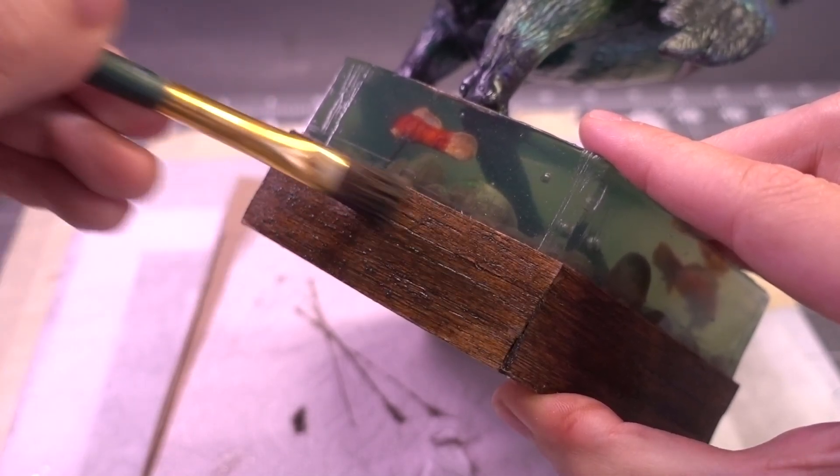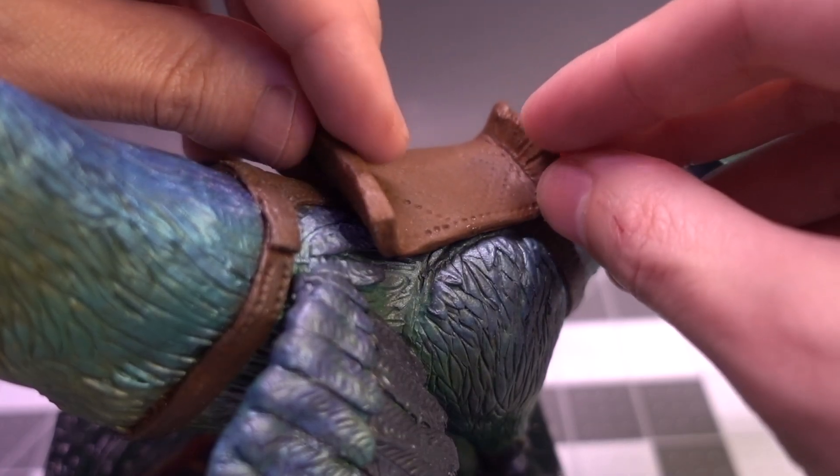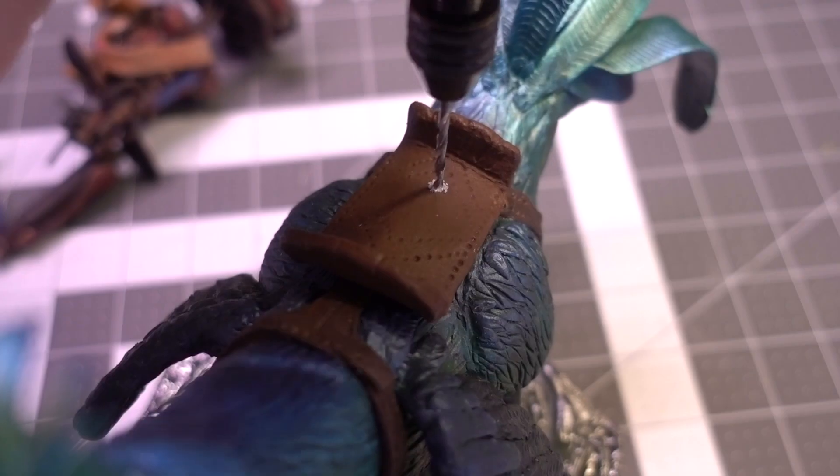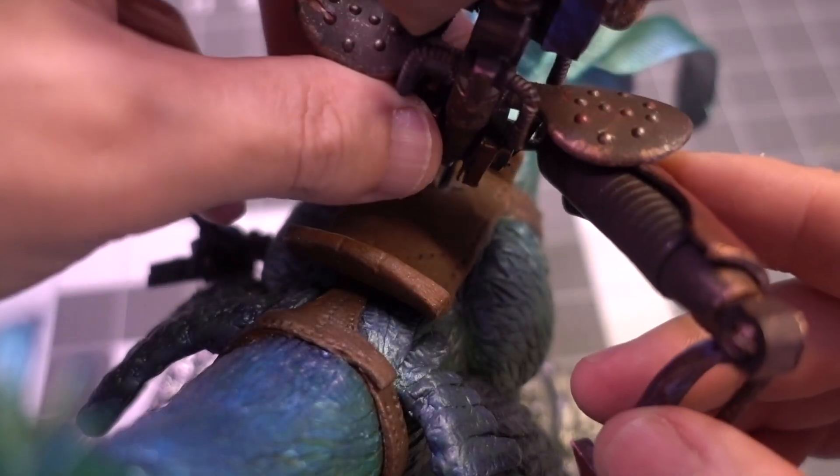With all that done, all that was left was mounting Mabbit, then adding his many, many accessories.